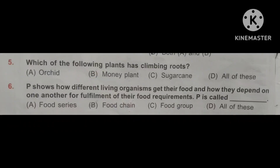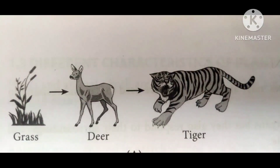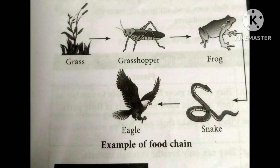Question number 6. P shows how different living organisms get their food and how they depend on one another for fulfillment of their food requirements. P is called a food chain. Here are some examples: carrot → rabbit → tiger; grass → deer → tiger; and grass → grasshopper → frog → snake → eagle. We can conclude that a food chain is a series or sequence which shows how one living organism eats other living organisms.